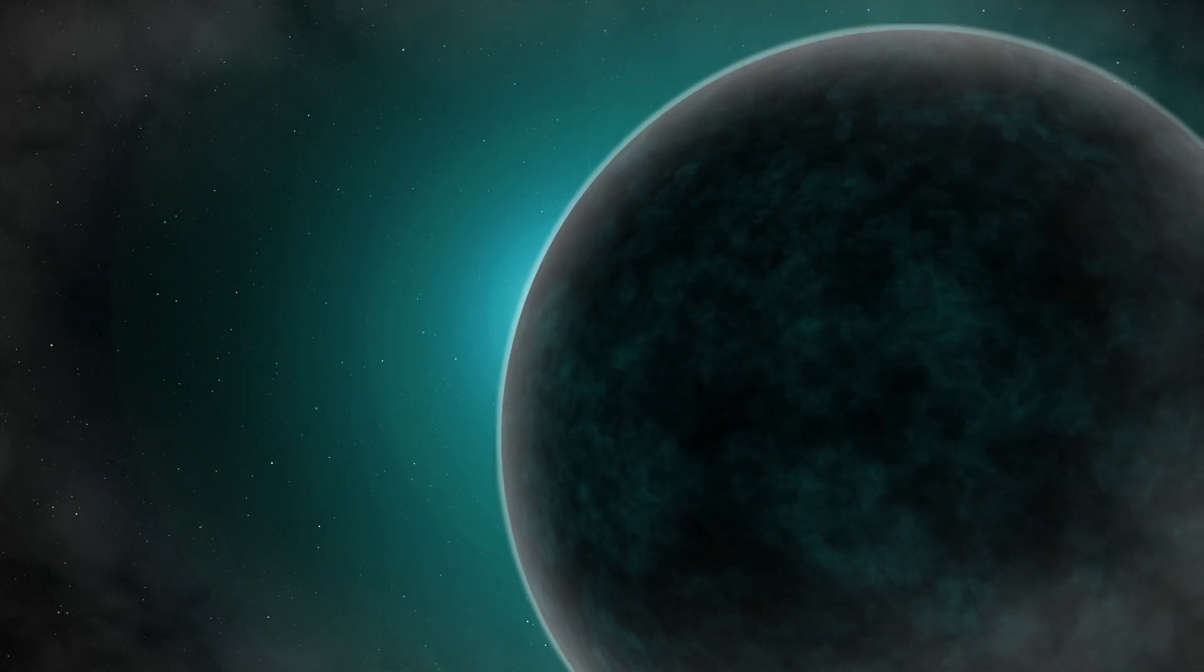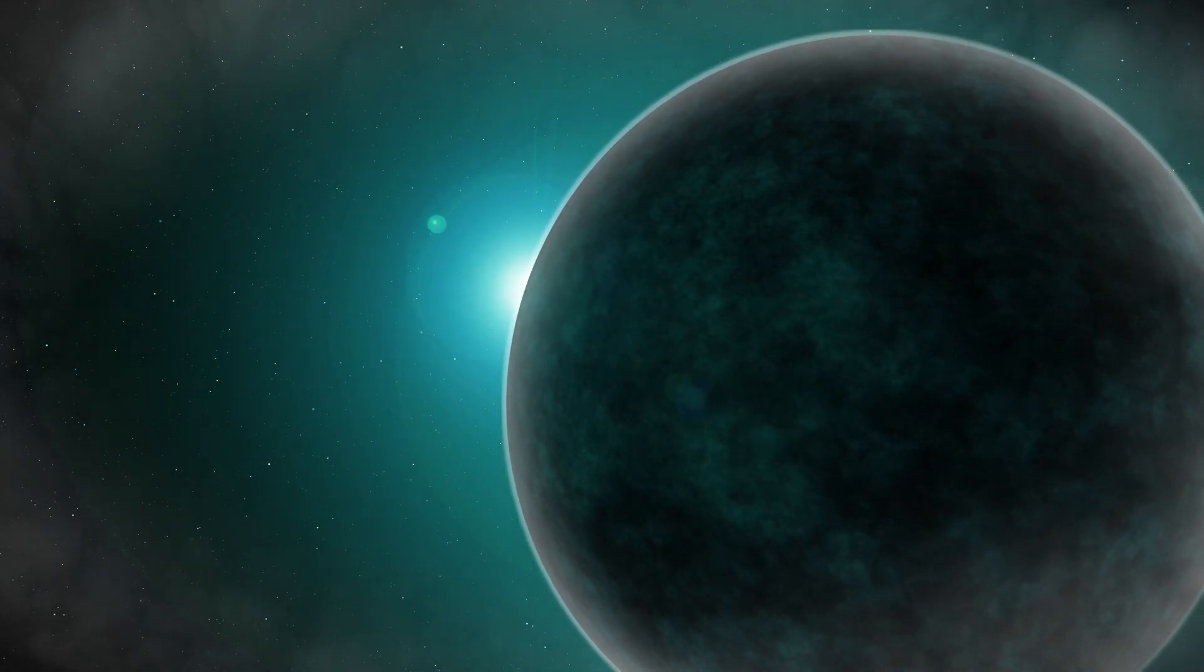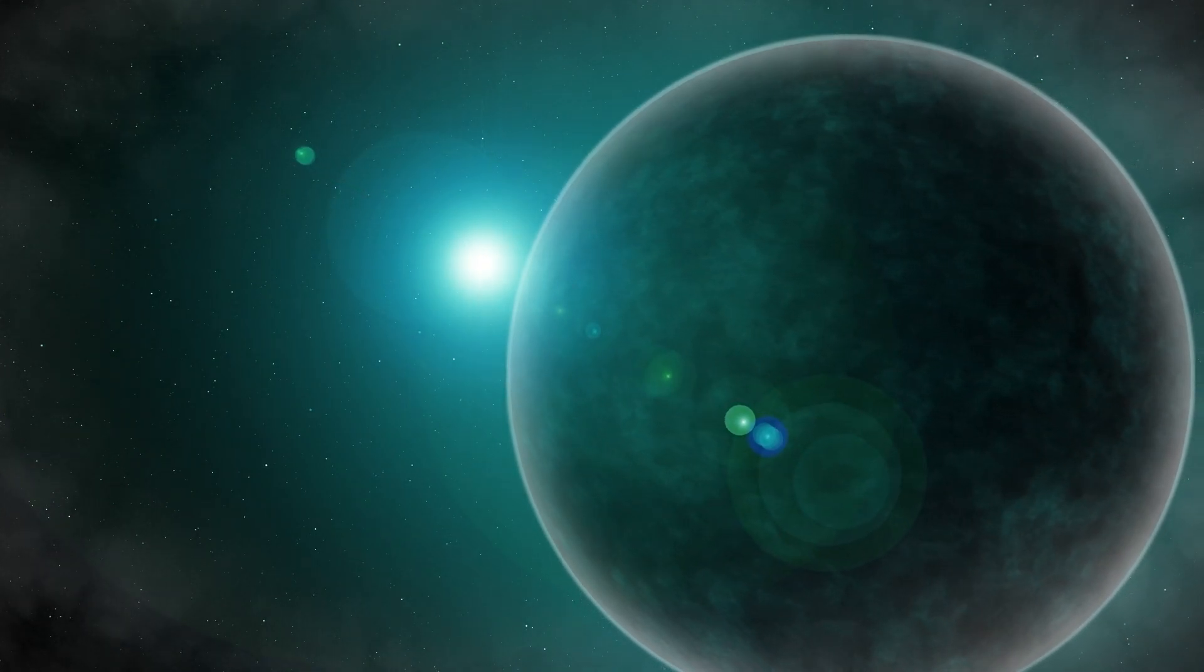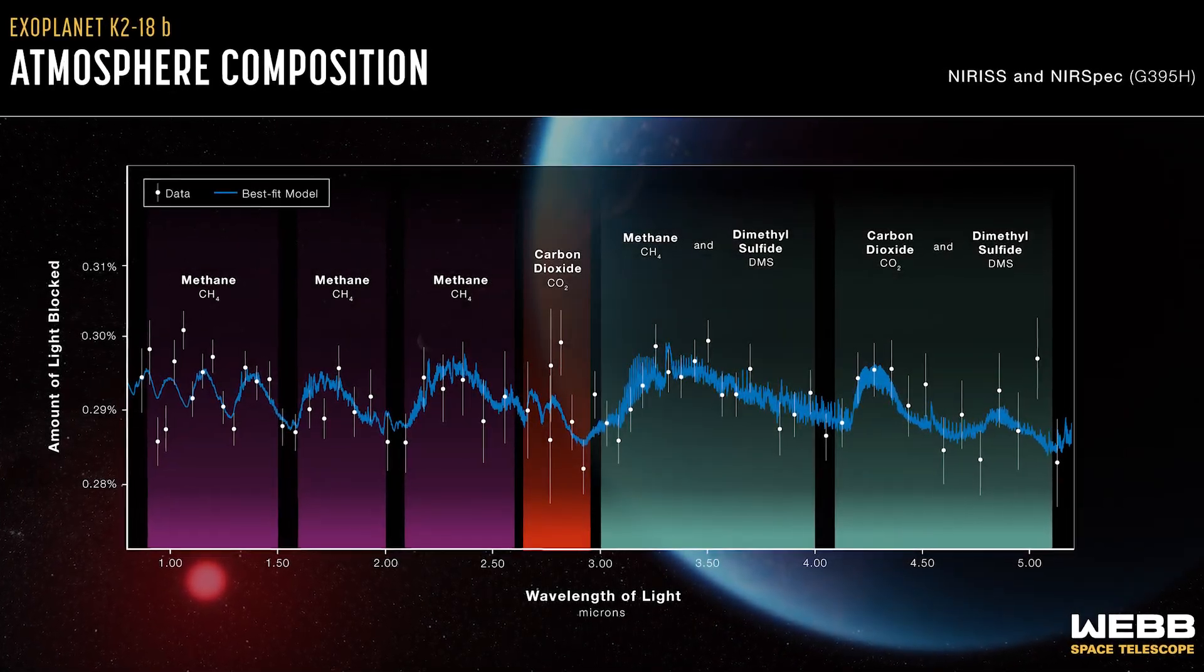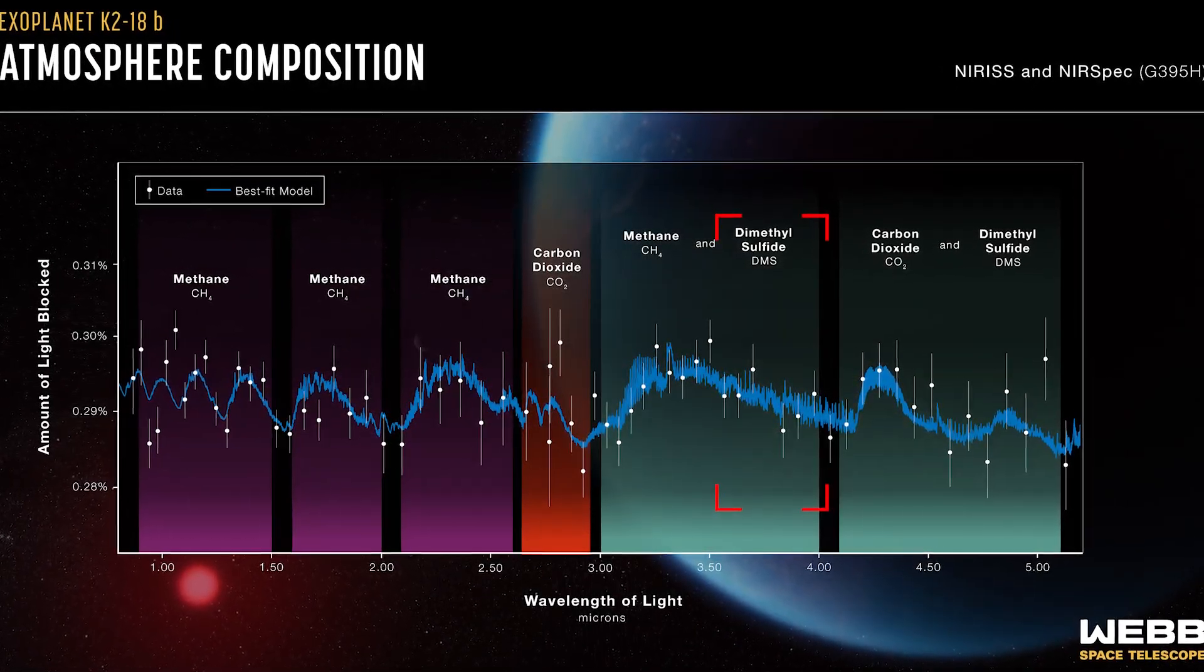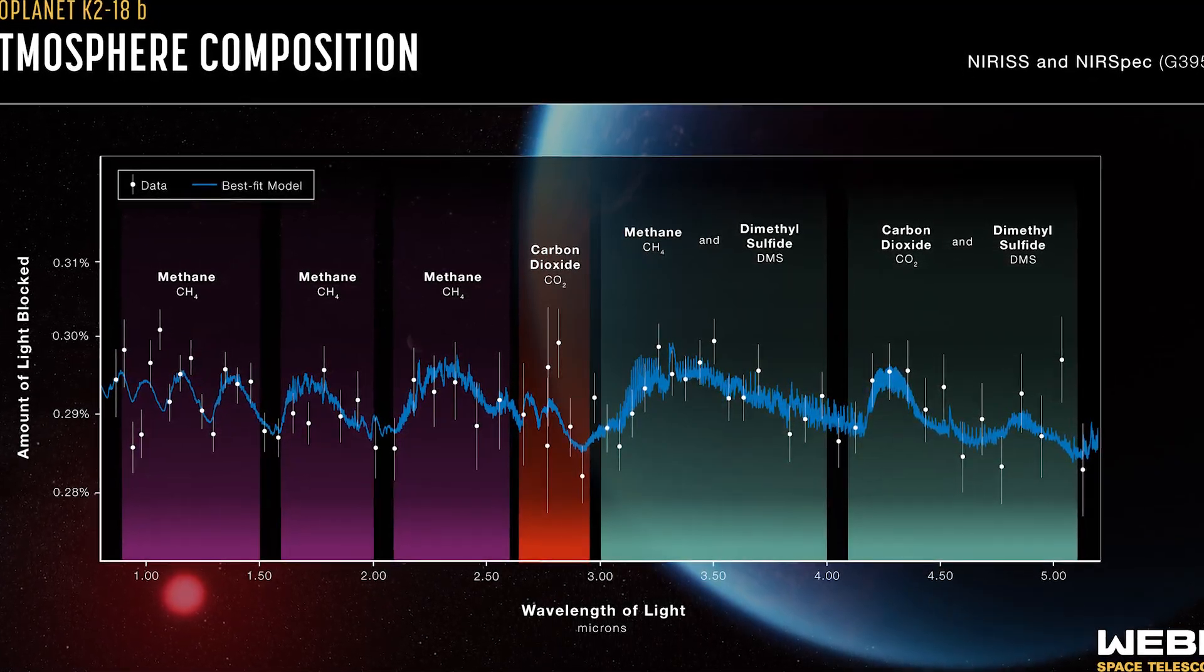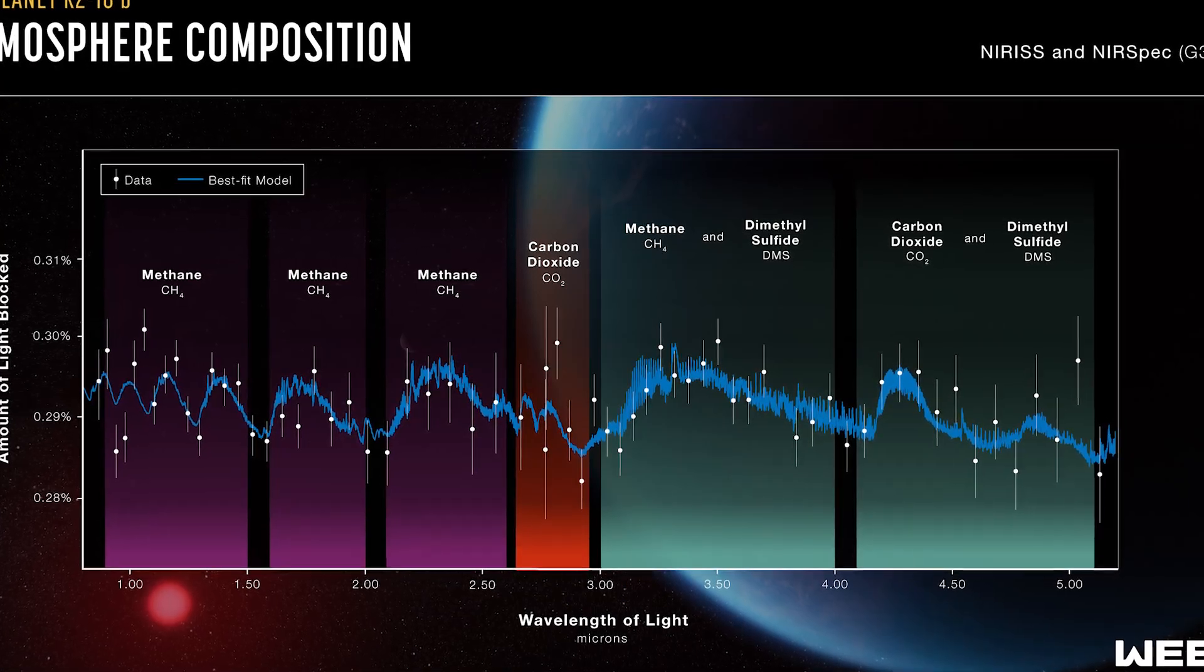Detecting DMS relies on light absorption by the planet's atmosphere during its transit across its star. But detection depends on the quantity present. The weaker the signal, the harder it is to confirm. Current observations show mixed results for DMS – sometimes detected, sometimes not. This uncertainty highlights the limitations of our instruments and the complexities of analysis.